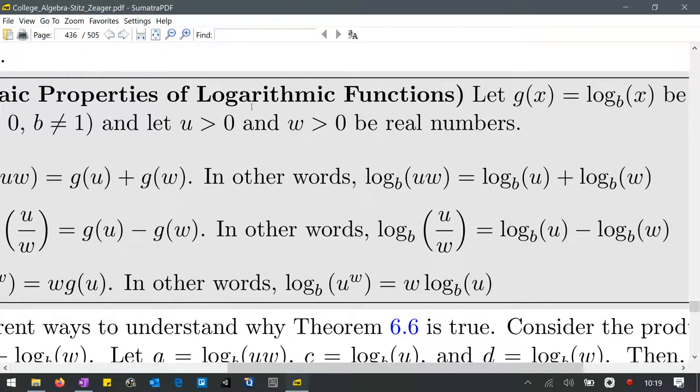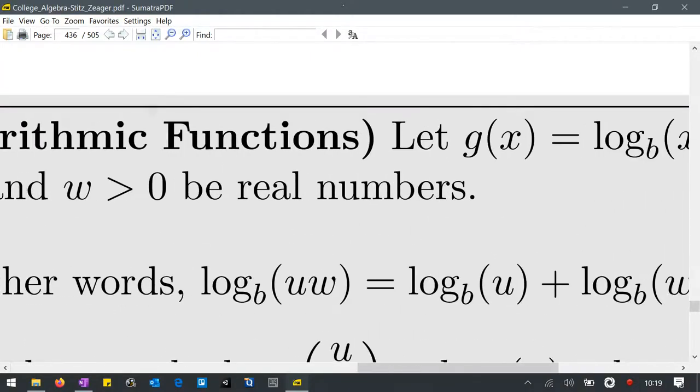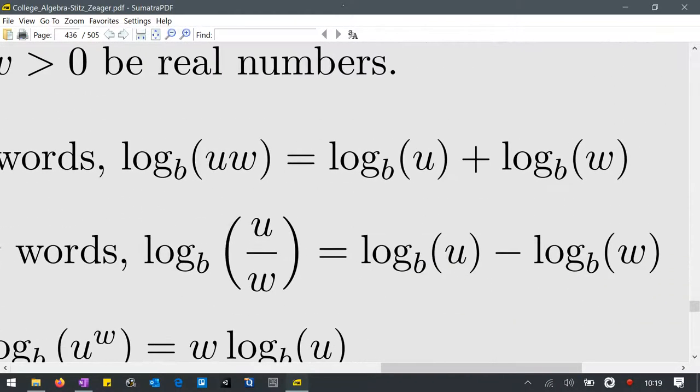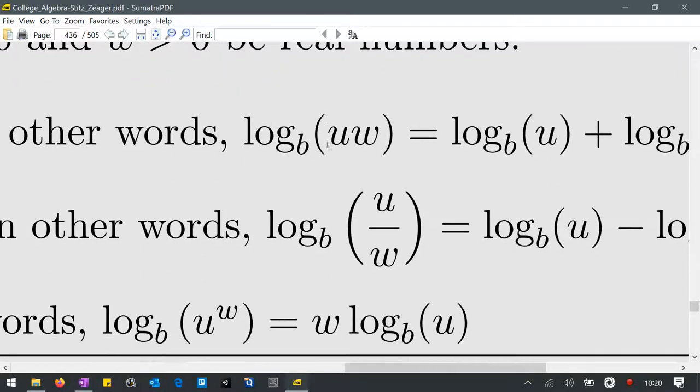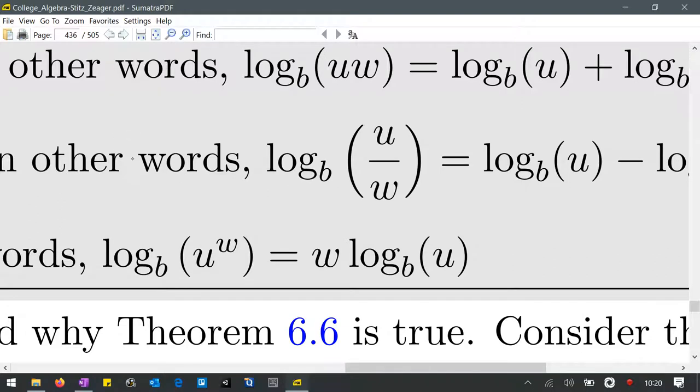We have a product property happening here. So when we multiply inside a log, we add outside the log. If we divide inside the log, which this problem does not have, we subtract outside the log. And lastly, if we have a power inside the log, that power can be brought out front as a coefficient.